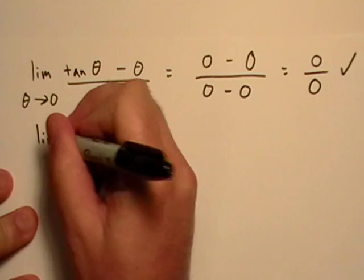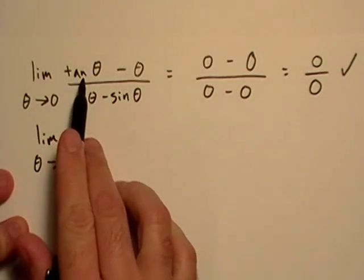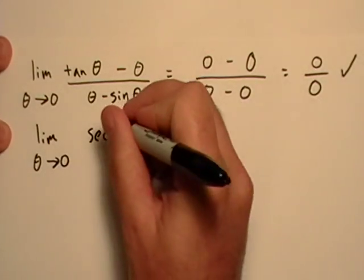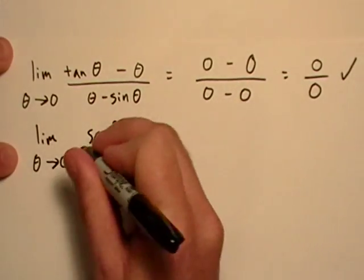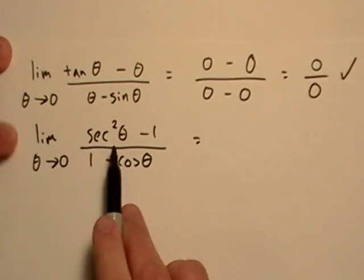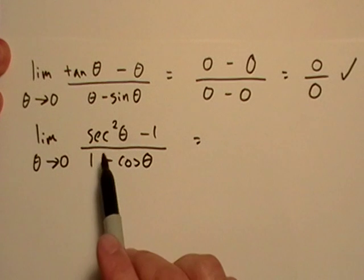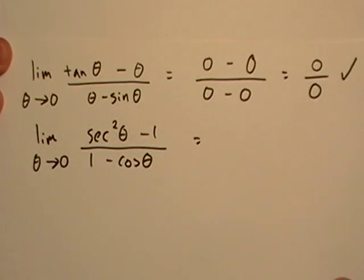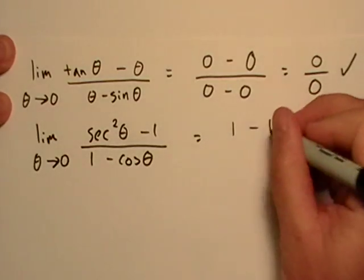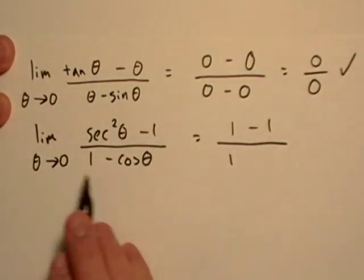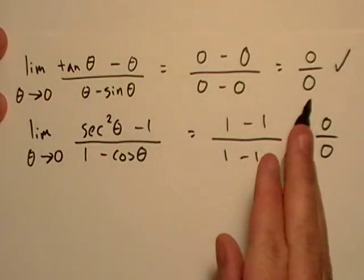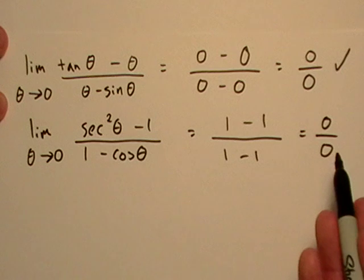So let's do some derivative stuff. And derivative of tangent, well, that's just secant squared minus one. And derivative of the bottom, that's just one minus cosine theta. So secant, that's just inverse of cosine. So if cosine goes to zero, which is one, secant is also just going to be going to one. So secant squared of zero is one minus one. Cosine of zero is one. So this is an example of a situation where we applied the rule once and we're still indeterminate, aren't we?